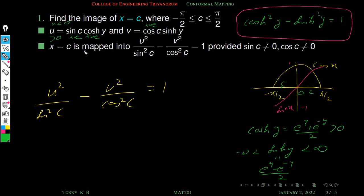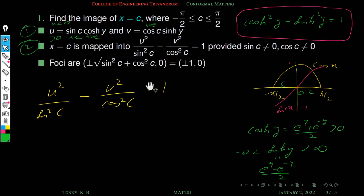So we have two conditions. The image of x equal to c is a part of this hyperbola satisfying the positivity or negativity of u depending on the sign of sin(c). The foci of this hyperbola can be found using the formula ±√(sin²c + cos²c) = ±1, so the foci are always at (±1, 0) regardless of the value of c.